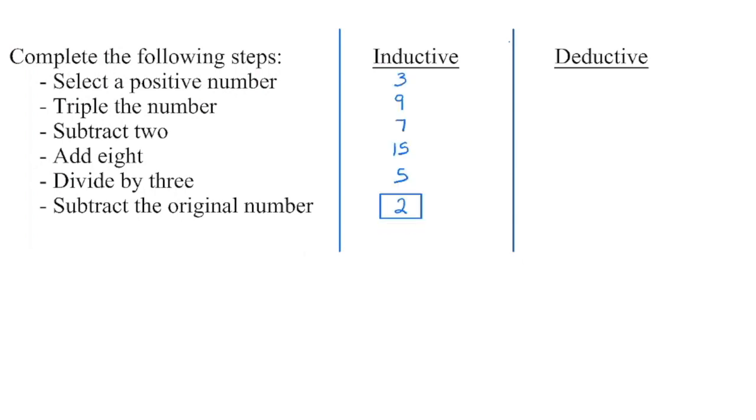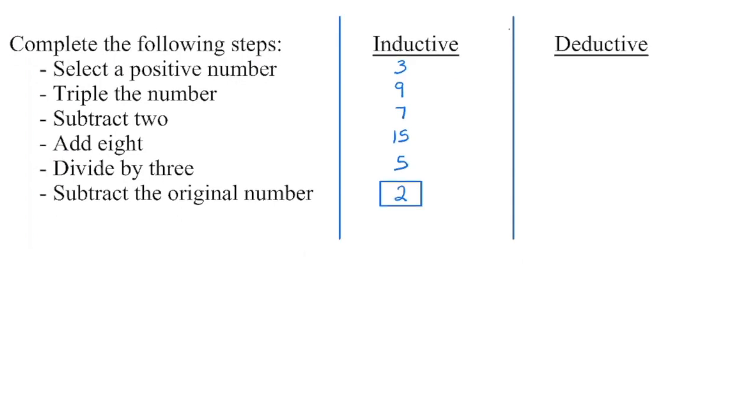I ended up with the number two. You got number two as well? Check with a friend. Did they get number two? Try it on your parents. Did they get number two? No matter what number we start with originally, it appears as though we're going to come up with two. This is an example of inductive reasoning where we can check or we can even try ourselves several different numbers. And we're going to see that each time we get an answer of two. This is a pattern that we're noticing, but it's not a proof. There could be a number out there that when we follow these steps, we don't end up with two as a final answer.